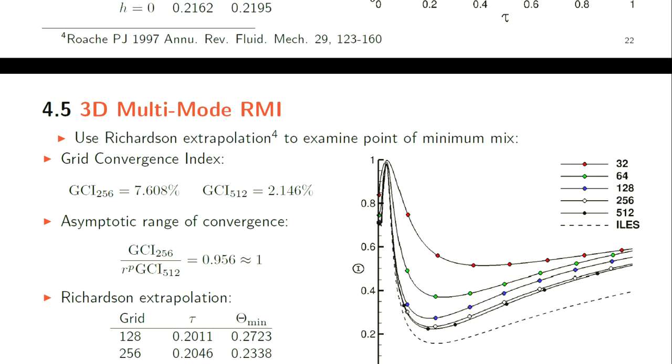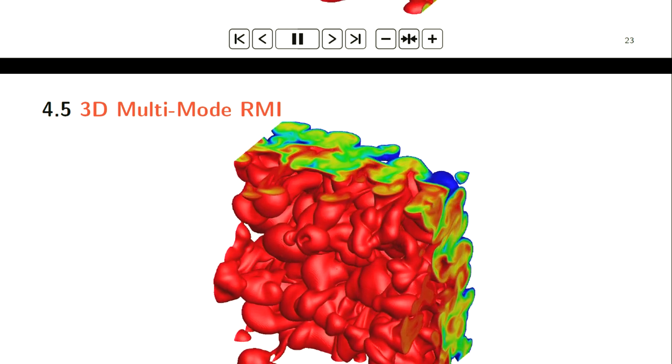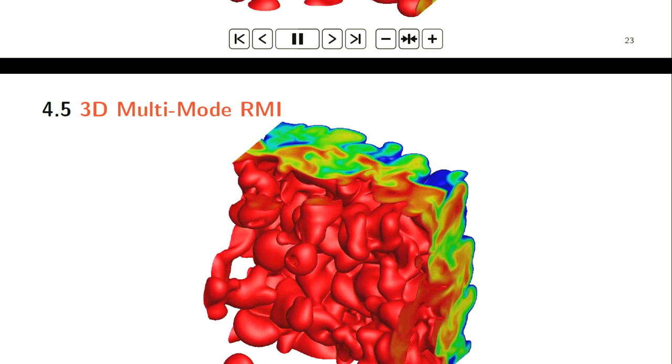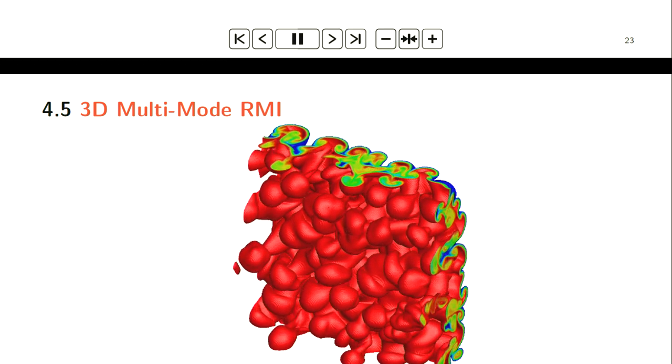Because we're interested in this range of non-dimensional time, we can use Richardson extrapolation to estimate the point of minimum mix, this point down here. For the three finest grid resolutions we calculate the grid convergence index between 128 and 256 here, and between 256 and 512. For these three grids we can see we've pretty much reached the asymptotic range of convergence. Then using Richardson extrapolation we extrapolate to find the point of minimum mix and also the non-dimensional time that occurs at. Here's a nice animation of that case. We see it's clearly not fully turbulent although you still see some spikes that get advected away from the main mixing layer, and fluid initially entrained right here actually mixes and diffuses quite quickly.